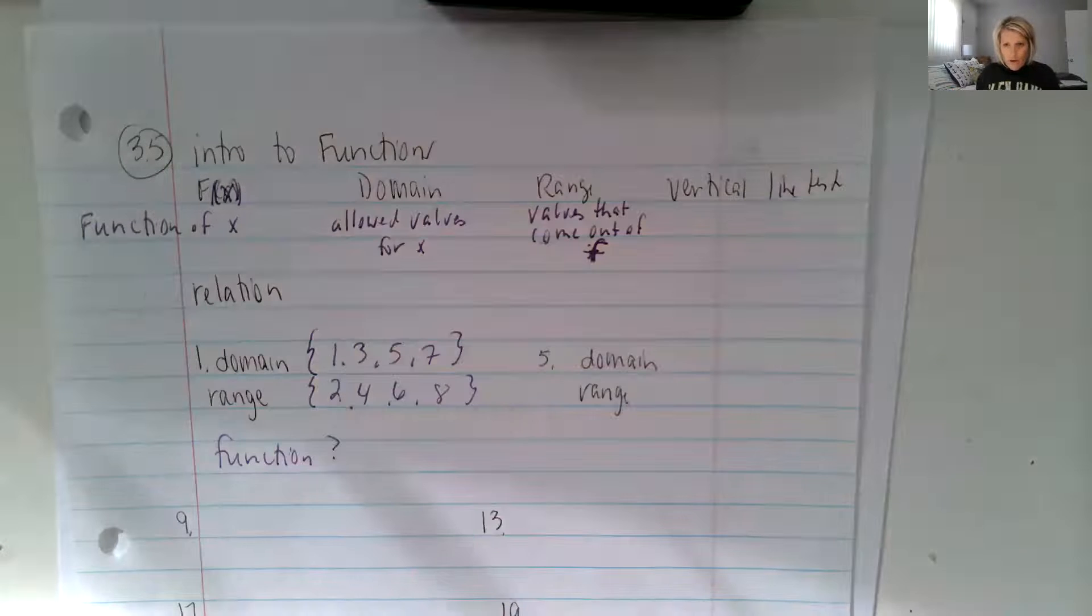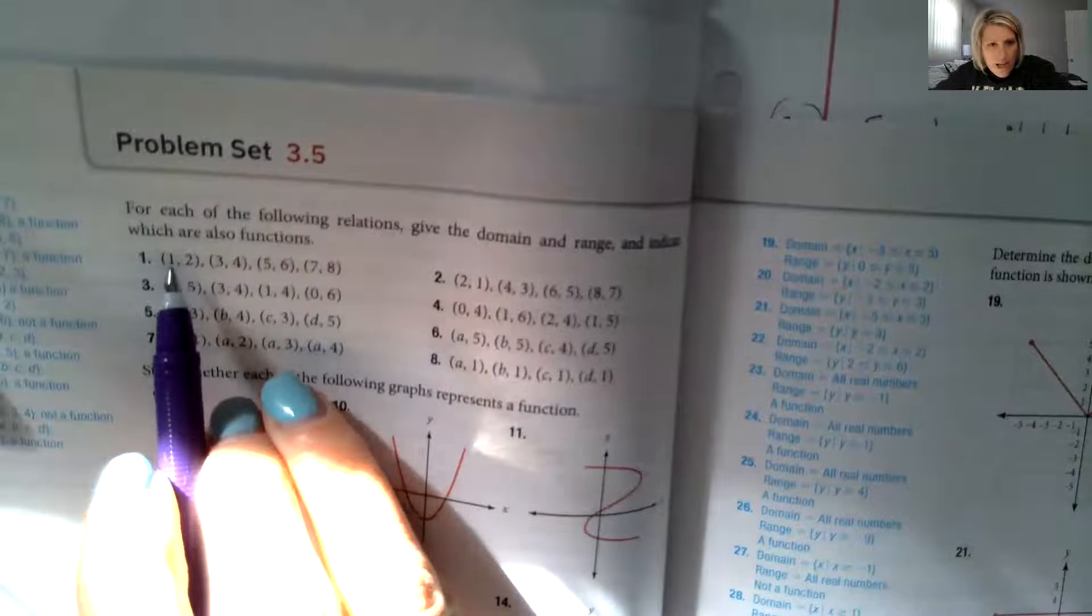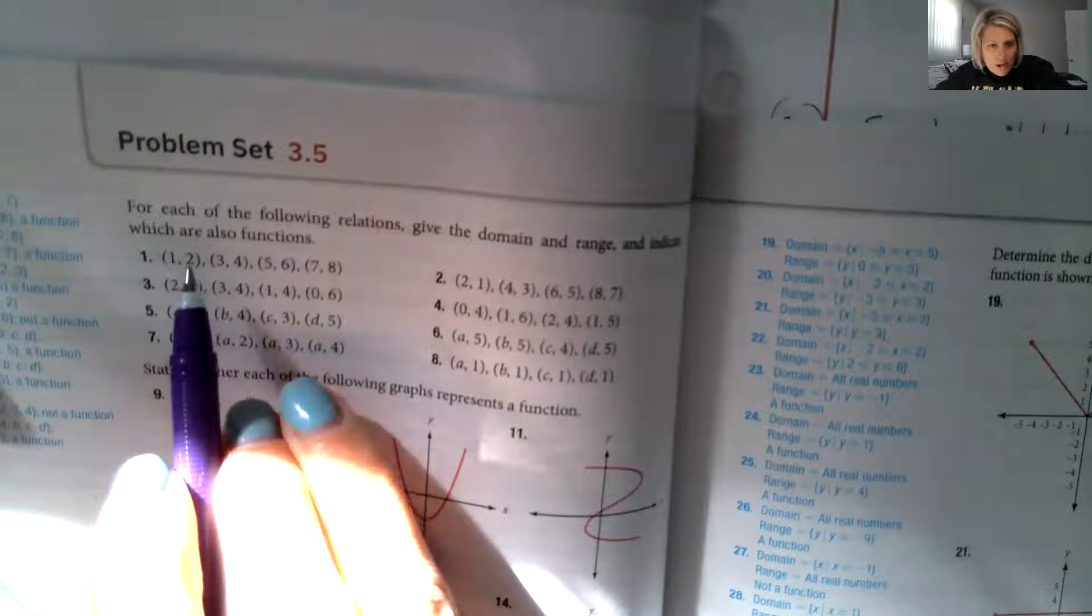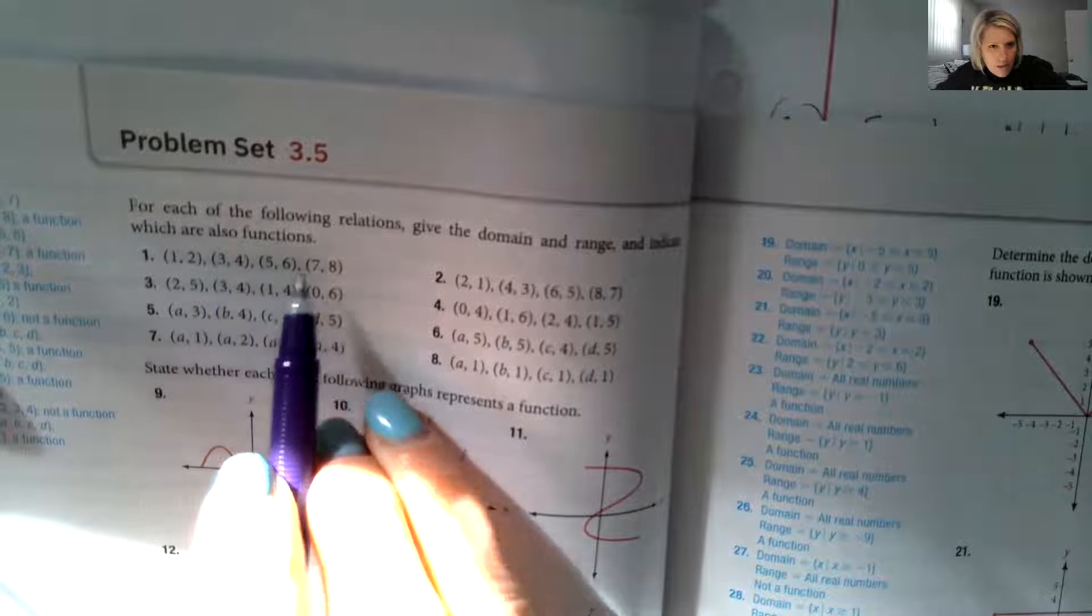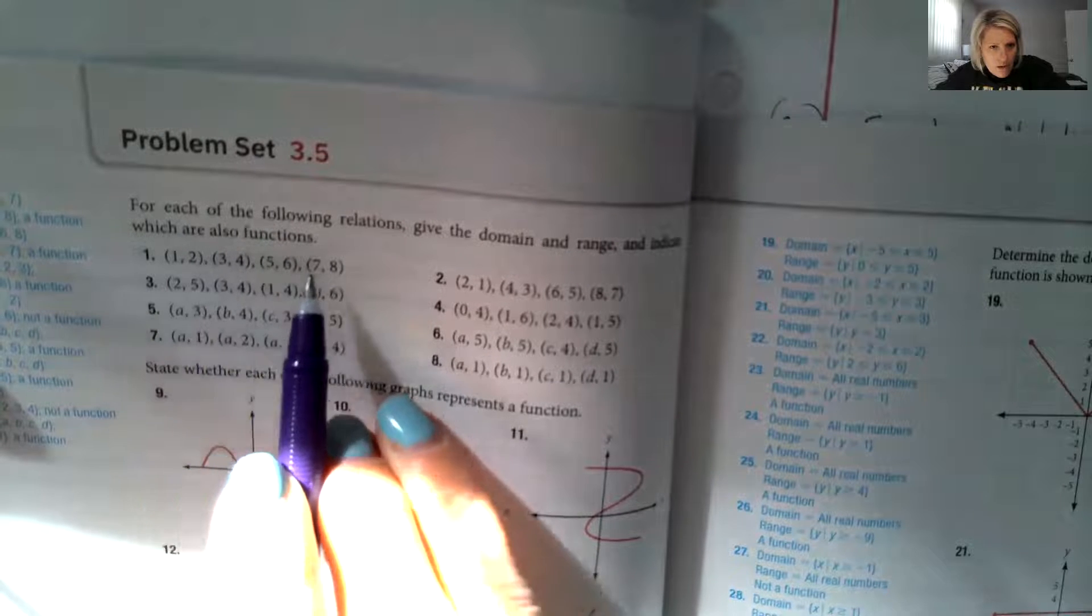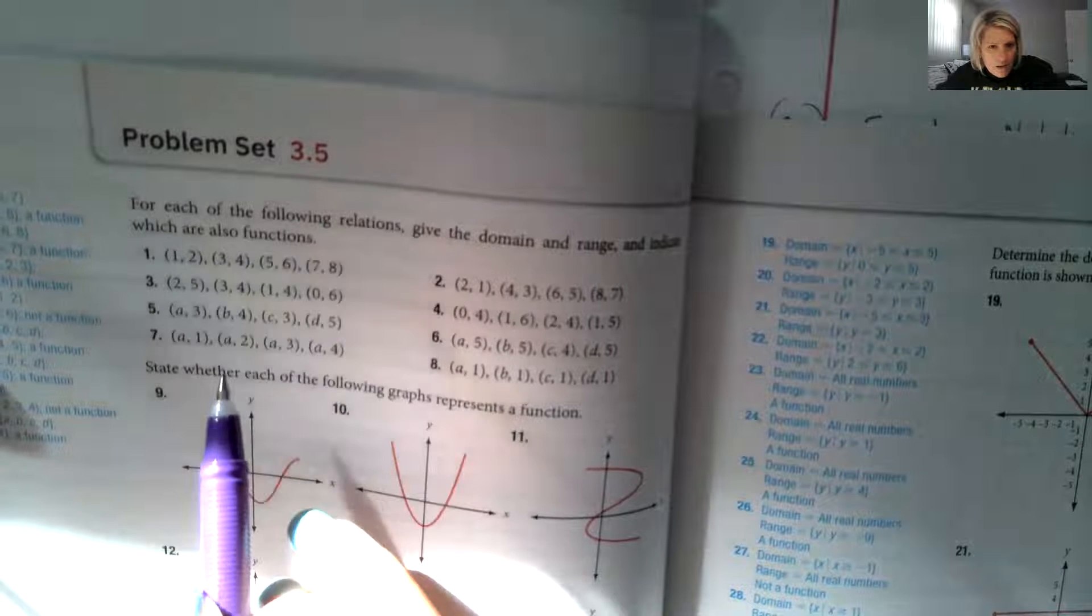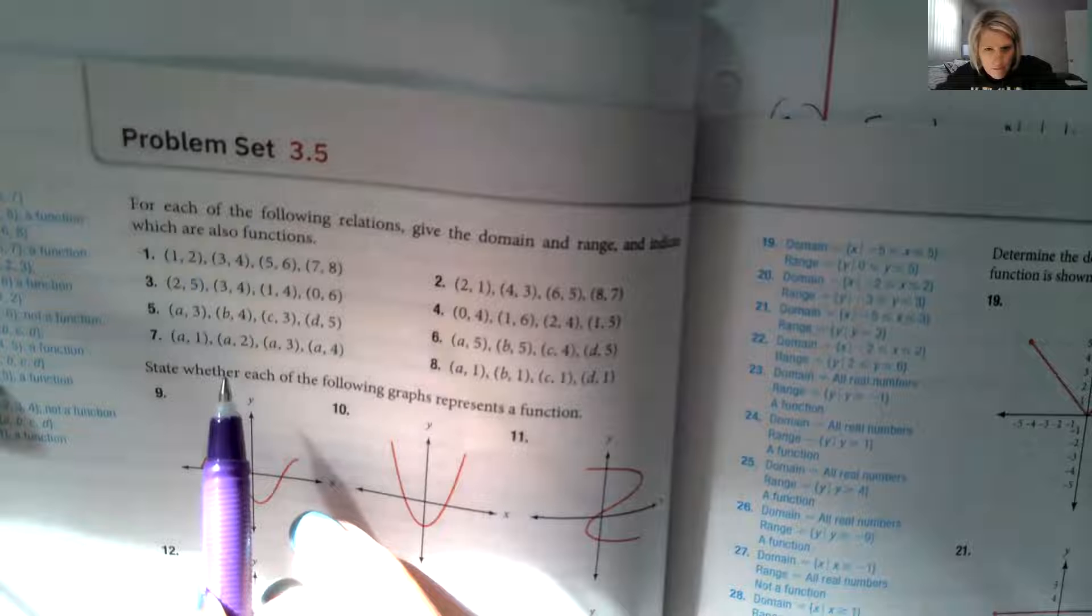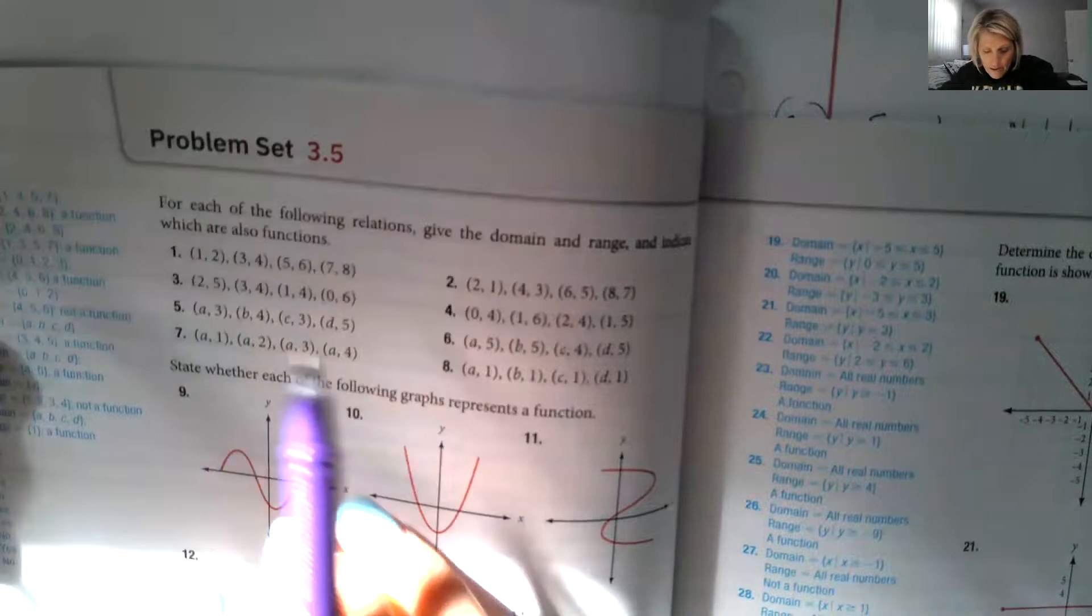So to be a function, every input can only have one output. So one cannot go to another number besides two, and it doesn't. And three cannot go to another number besides four, and it doesn't. So essentially we cannot have duplicate X inputs. We cannot have duplicate X inputs.